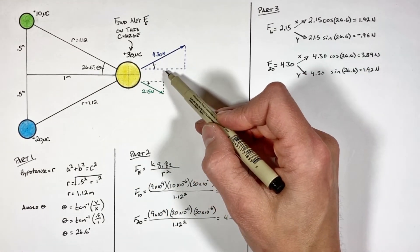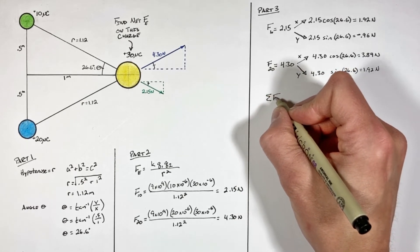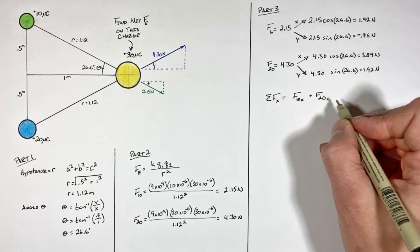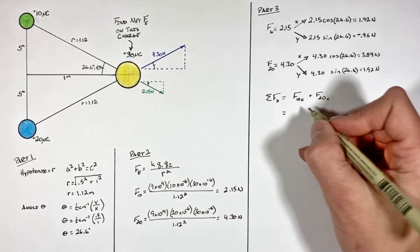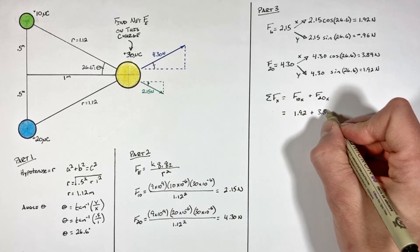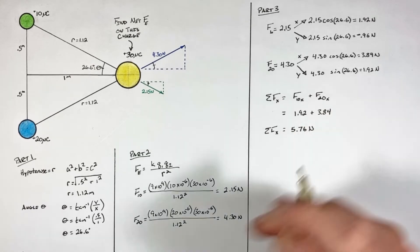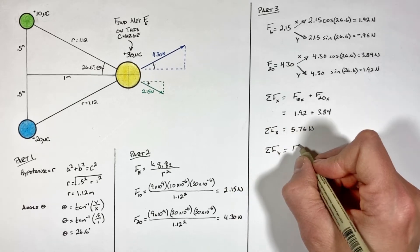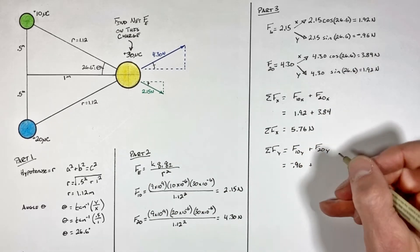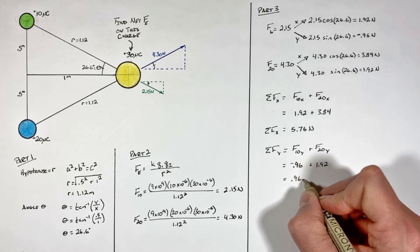Now that we've broken both vectors into their horizontal and vertical components, we can add them together. The net horizontal force is the sum of the x components: 1.92 plus 3.84, giving a total horizontal force of 5.76 newtons. In the y-axis, the vertical components are negative 0.96 newtons plus positive 1.92 newtons, leaving us with a total vertical force of 0.96 newtons directed upward.